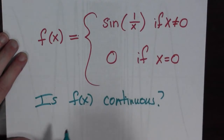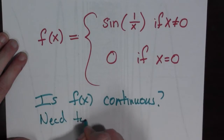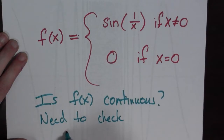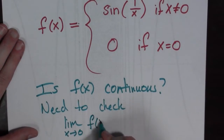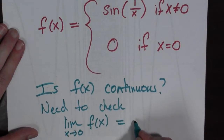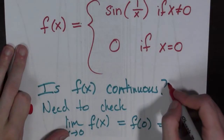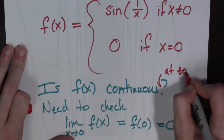So the only thing we need to check is the limit as x goes to 0 of f of x is equal to f of 0, which is equal to 0. So we want to know: is f of x continuous at 0?